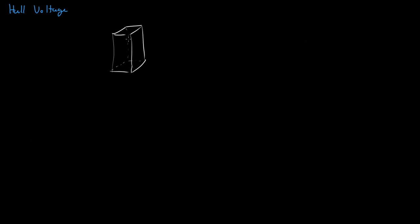So let's say we have this box. What we do is we apply a current that makes it flow this way. We have some current flowing through here, and we're going to say that current is equal to 20 amps. Now the next thing we want to look at is the width of this box. Let's say our box has a width of 0.02 meters, which is just 20 millimeters.